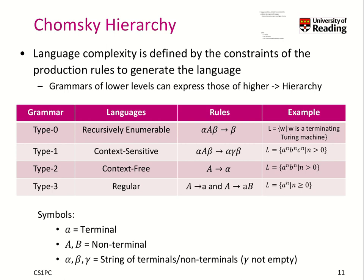Type 0 languages are recursively enumerable — the most generic. All they require is that the left-hand side contains at least one non-terminal somewhere, similar to context-sensitive, but the right-hand side is free for you to choose anything. The key difference is that gamma here cannot be empty. In type 0, you can have left-hand sides that get translated to nothing.